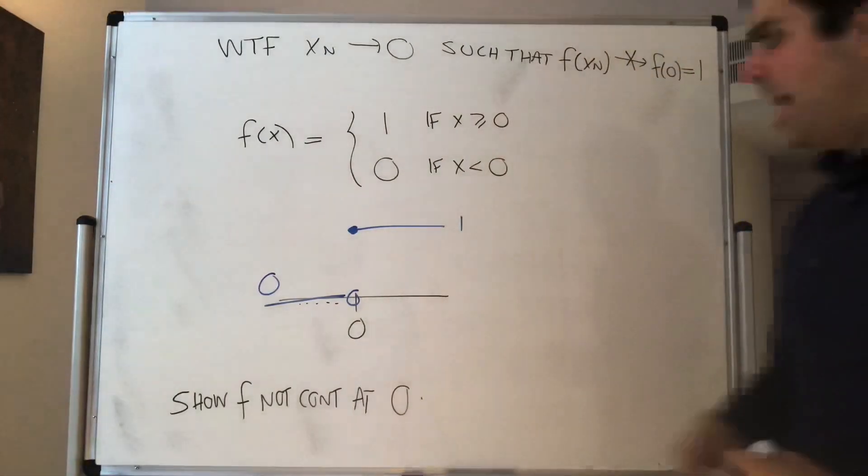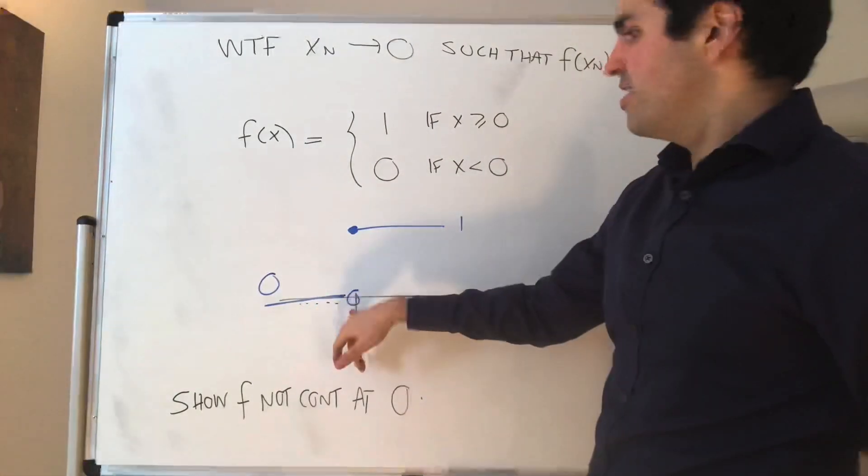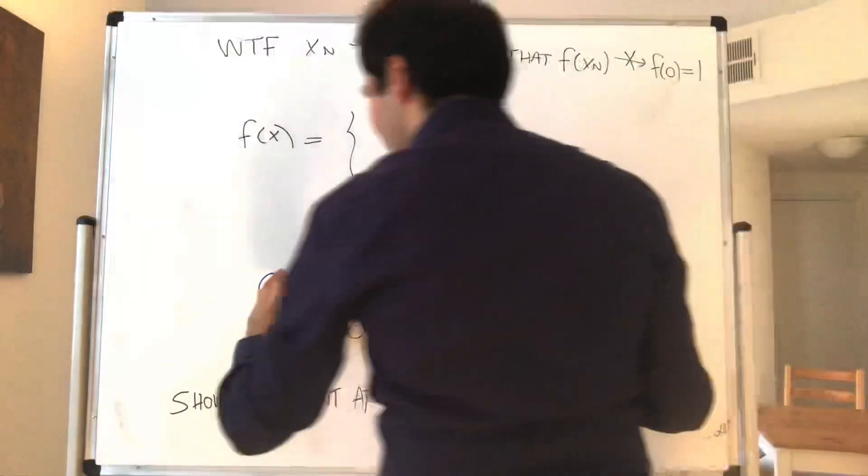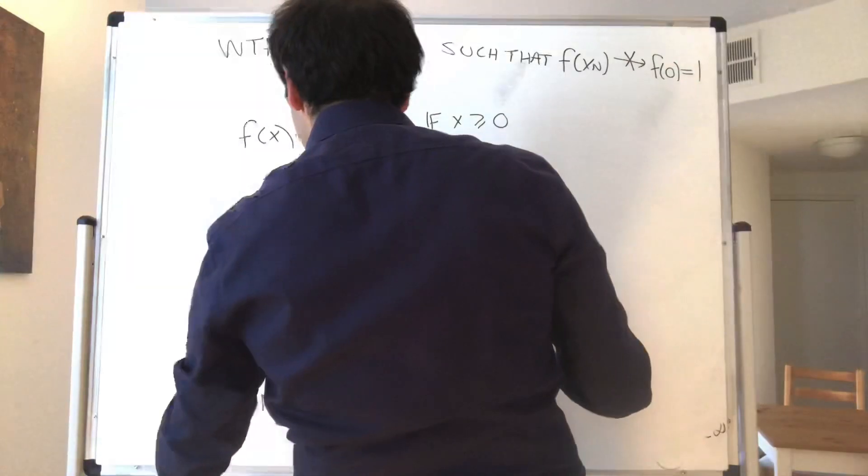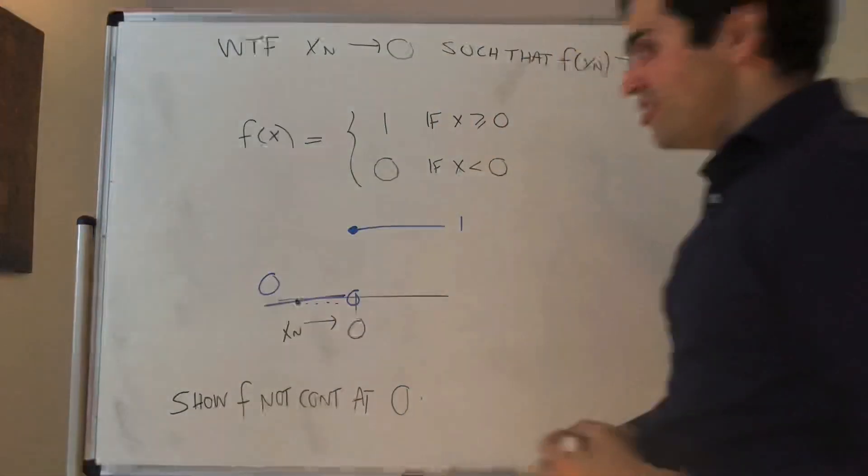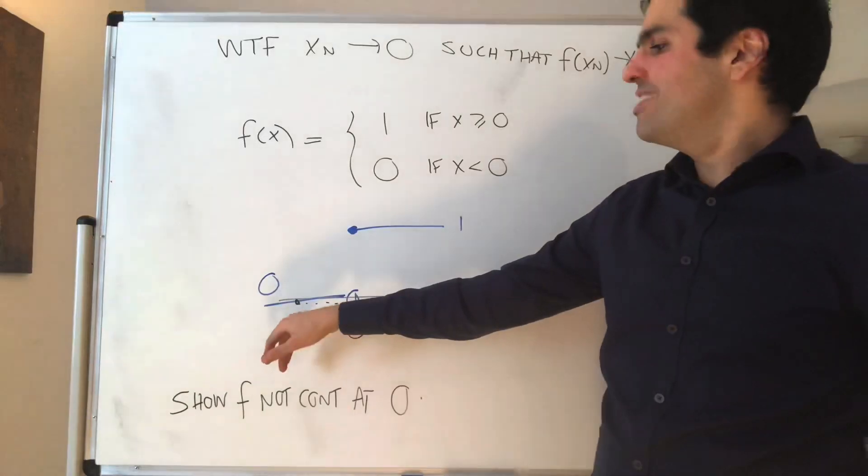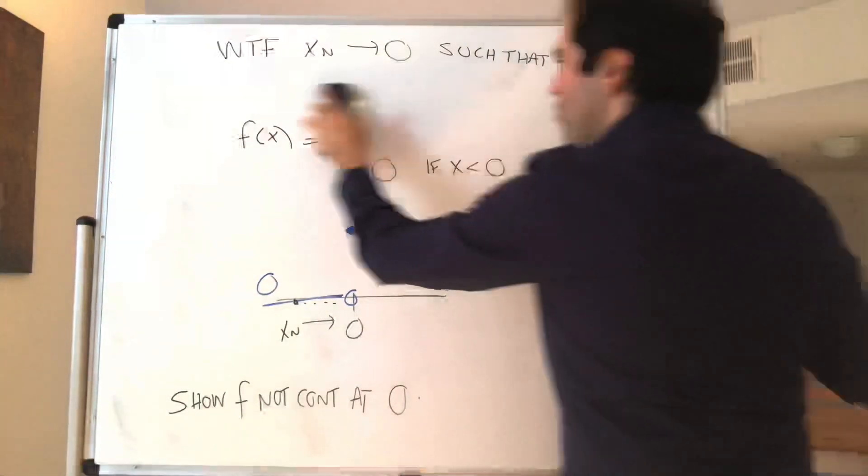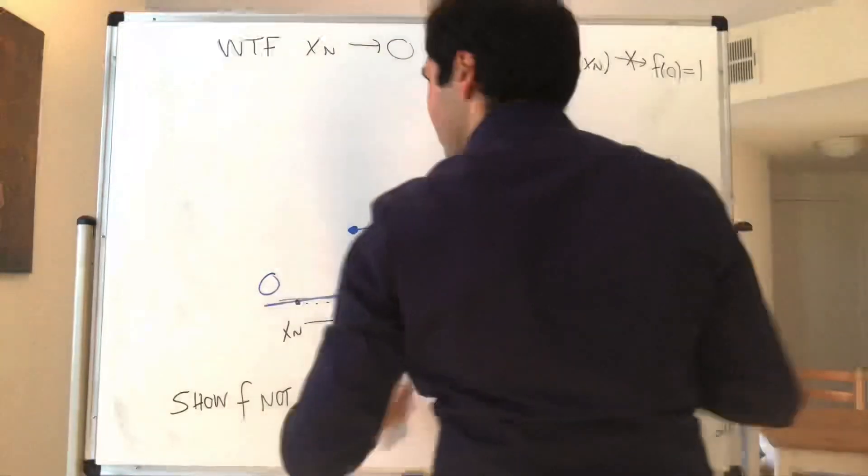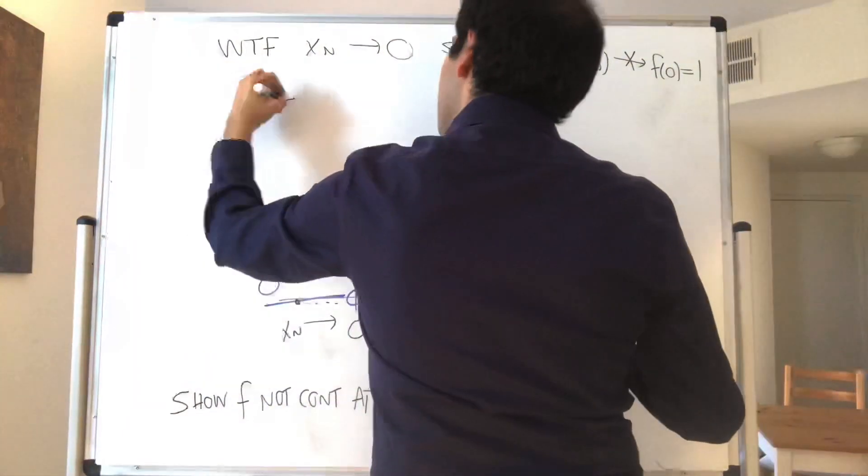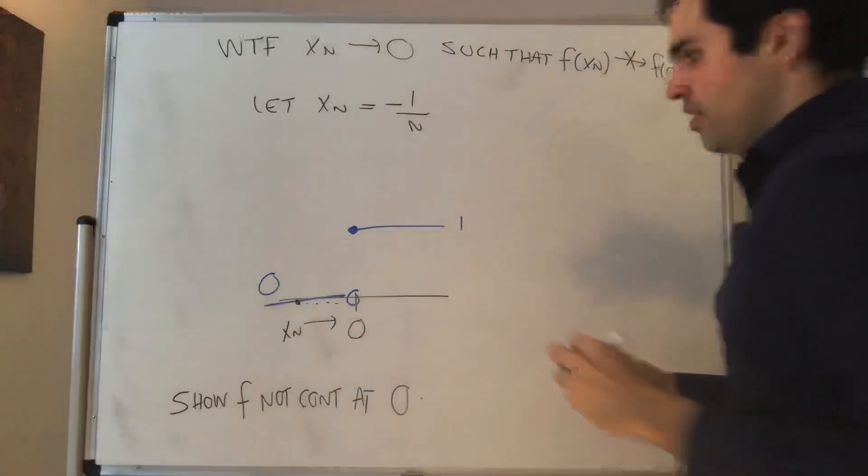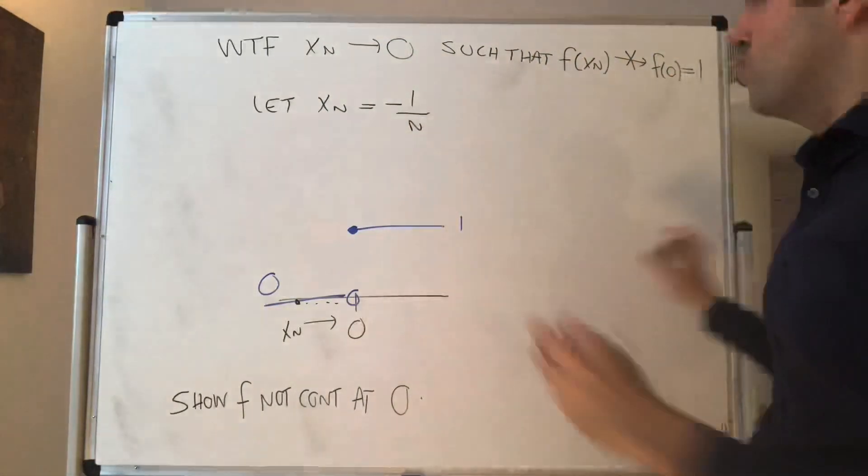In other words, can you find some sequences converging to 0 such that f of 0? Well of course you bet, because you can just choose a sequence xn to be negative and converging to 0. For instance, let xn be minus 1 over n. That sequence converges to 0.